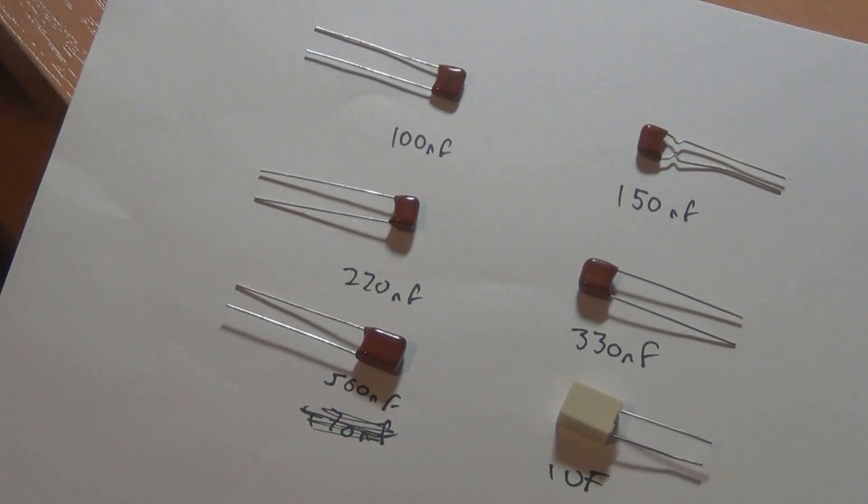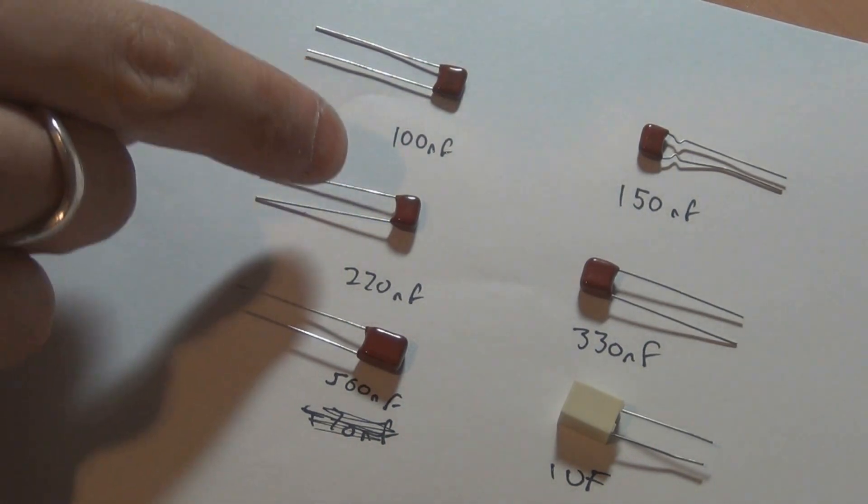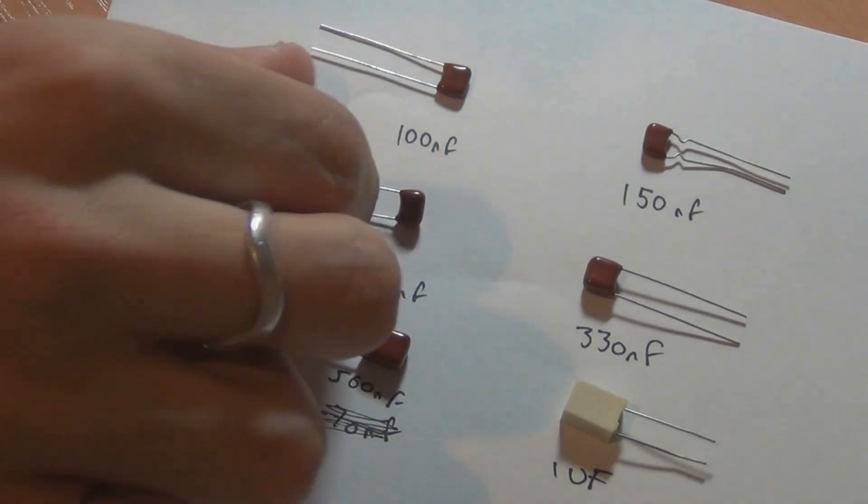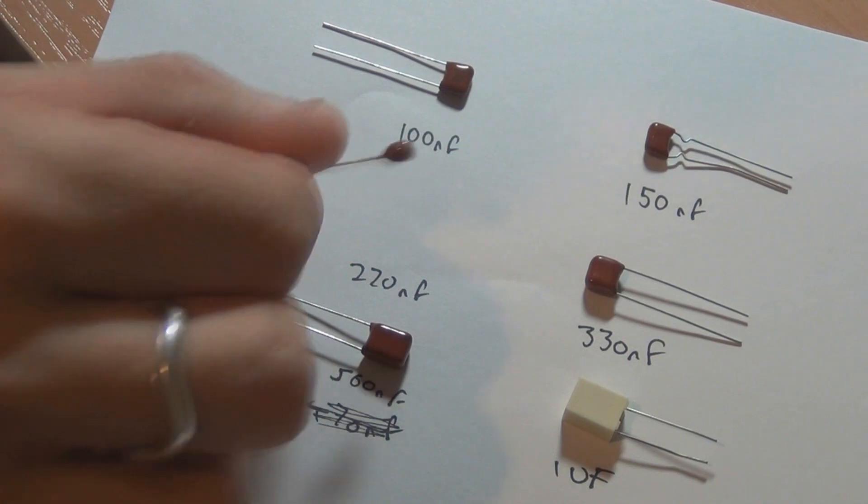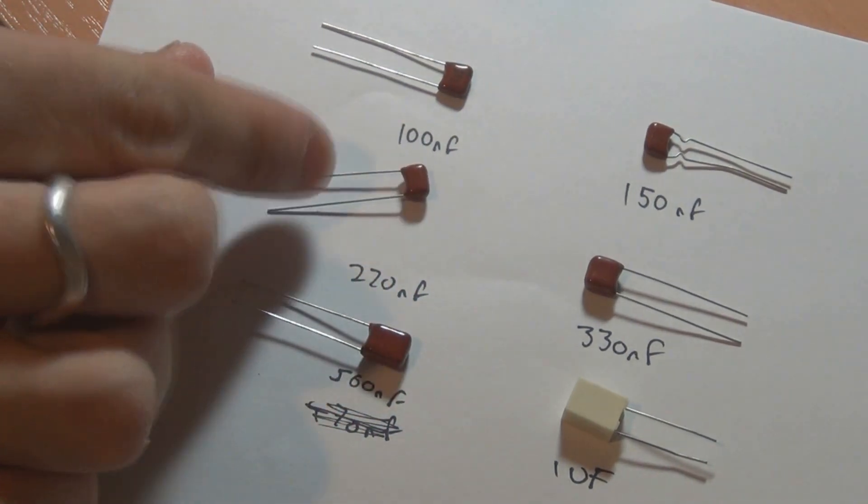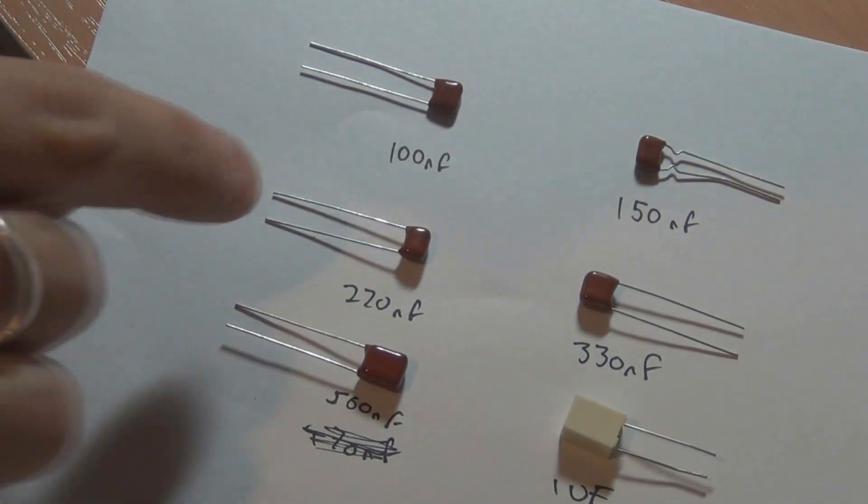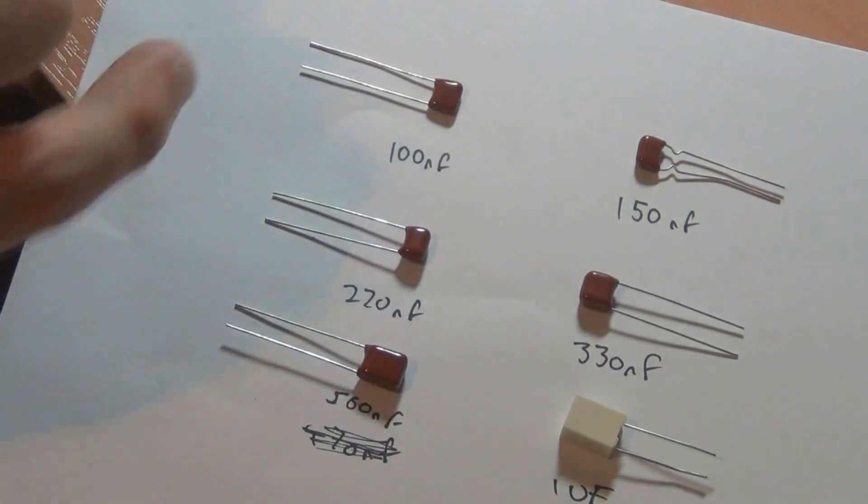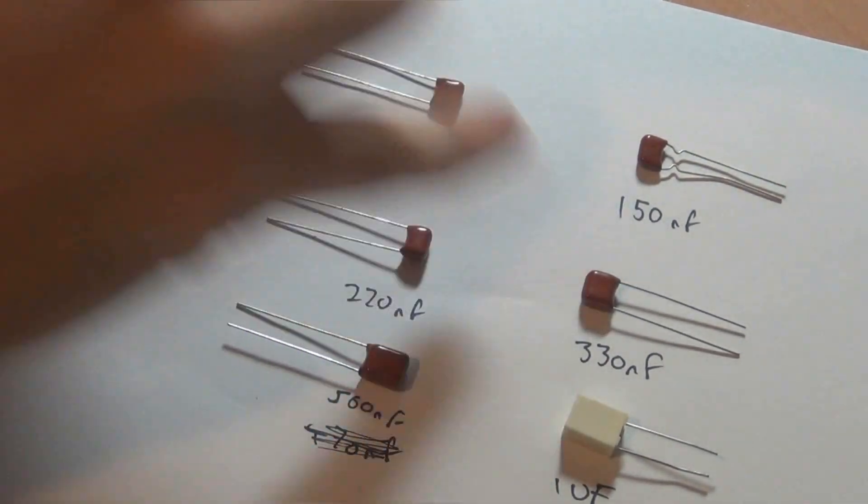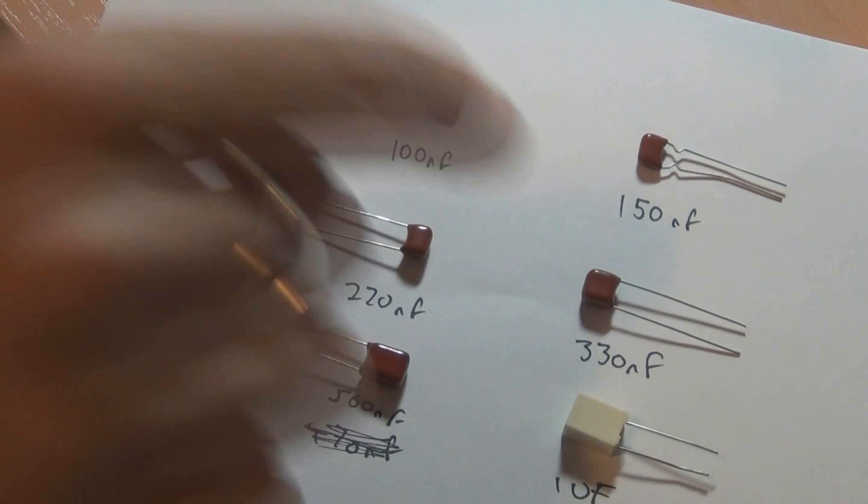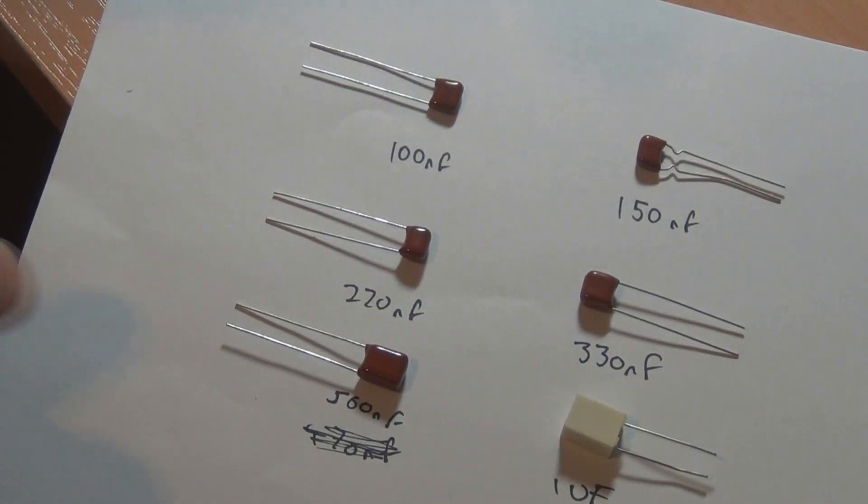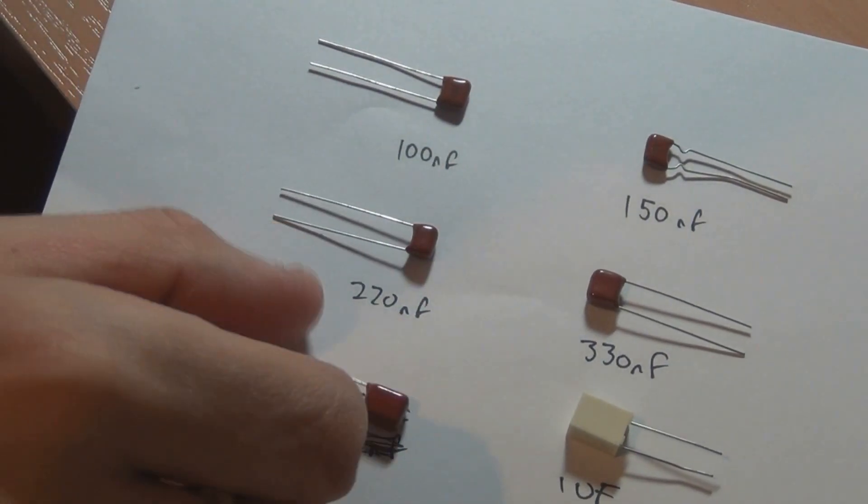Now if you take a look at the ECQ capacitors, you've got top one's 100 nanofarad and this one's 150. They're pretty much the same size but 220 nanofarad is already getting fatter. It actually looks like the height's lower but the width is fatter. And then this one gets bigger on both dimensions. It's pretty much the same as the 220 but it's maybe a mil higher than the 100 nanofarad. And then down the bottom this 560 one's getting quite chunky. You can see it's quite thick.